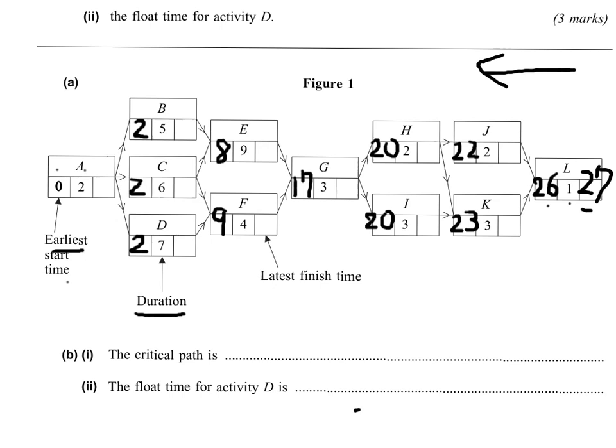Now day 27 is the finish, and it took 1 day to finish, so K's latest finish time is 27 take away 1, which is 26, and here as well, 26.